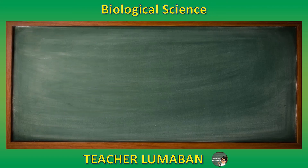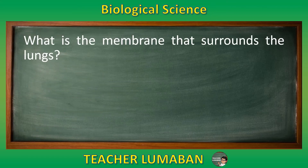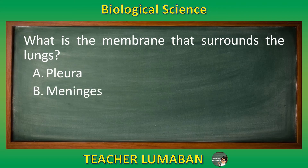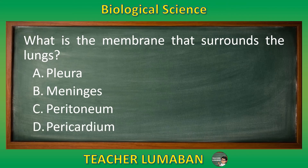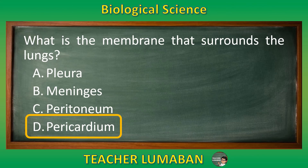What is the membrane that surrounds the lungs? Letter A: pleura. Letter B: meninges. Letter C: peritoneum. Letter D: pericardium. The correct answer is letter D, pericardium. The membrane that surrounds the lungs is pericardium.